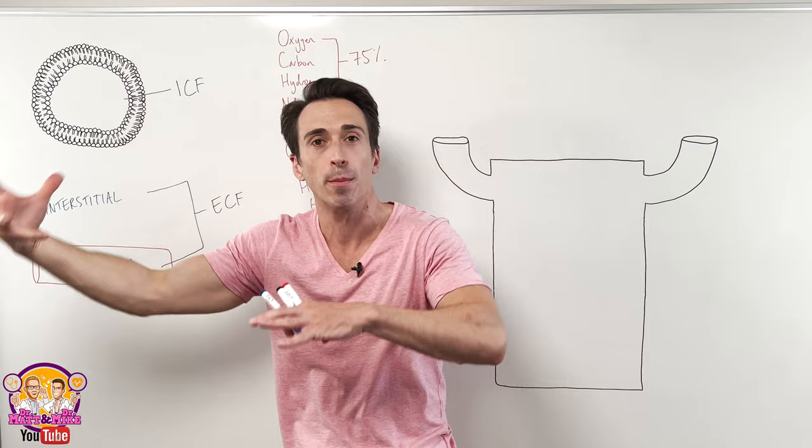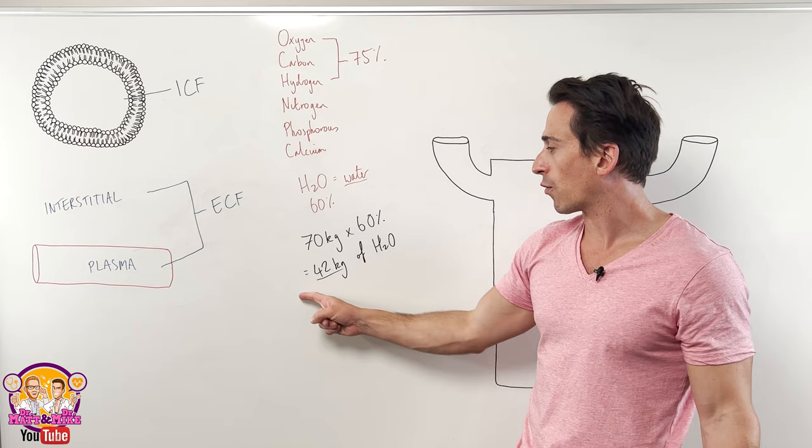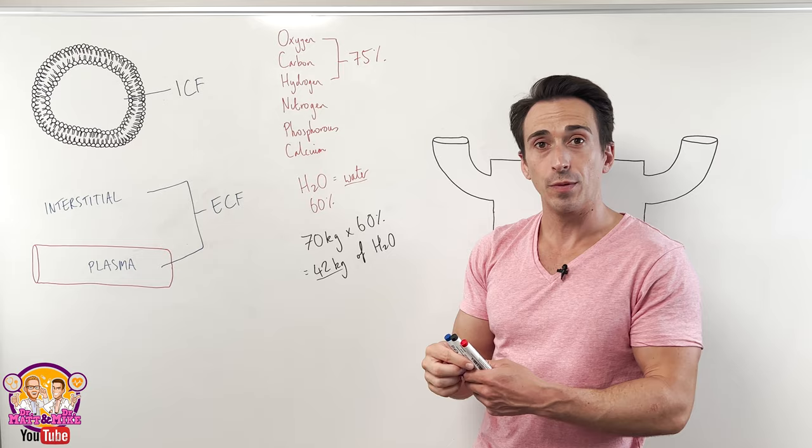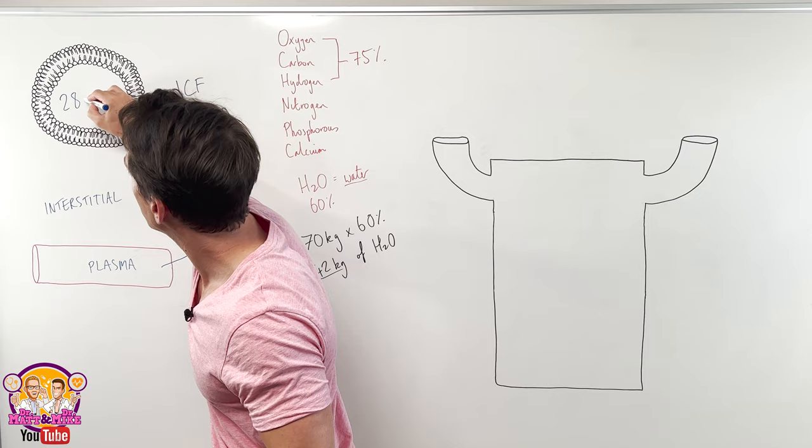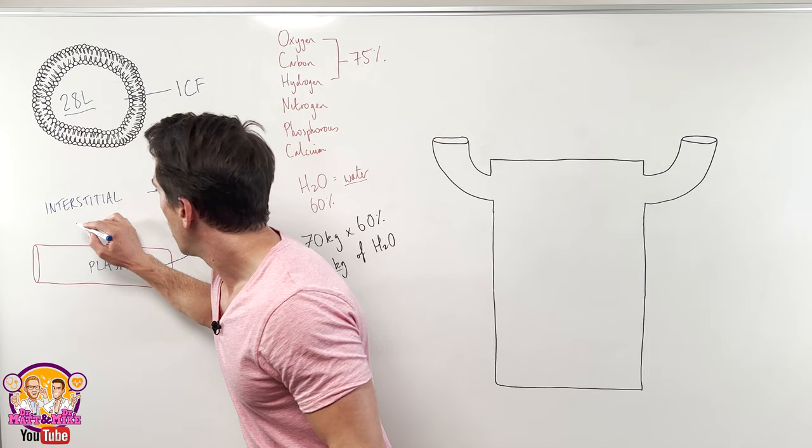So how does this 42 kilograms fit within each of these compartments? All right. So of the 42, you will find that 28 liters of that sits inside the cells. That's two-thirds.